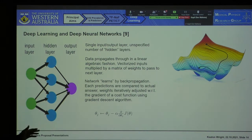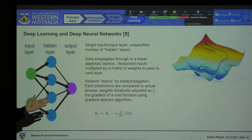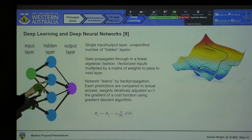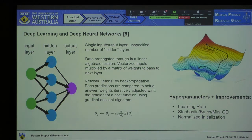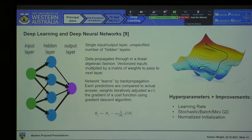If this is a little mathematical, it's easier to visualize graphically. Here we have a 3D representation of a cost function, and over each iteration of the training data, the model navigates through that landscape looking to minimize the cost and improve prediction accuracy. There are a couple of methods to improve performance, such as adjusting the learning rate to avoid overshooting troughs, stochastic batch and mini gradient descent — which balances computational power with model accuracy — and normalized initialization.